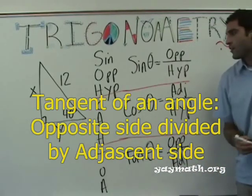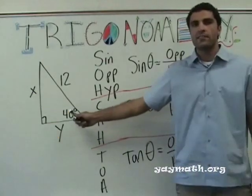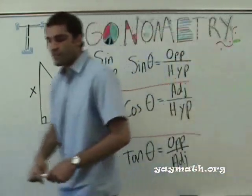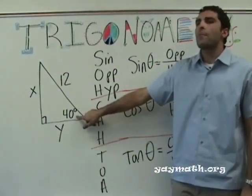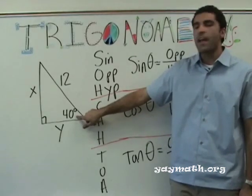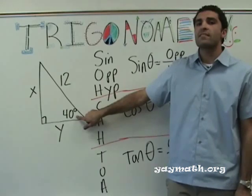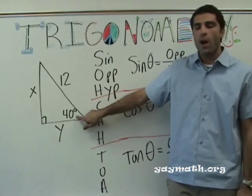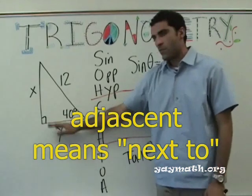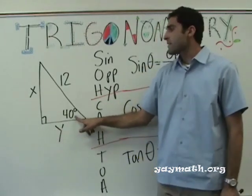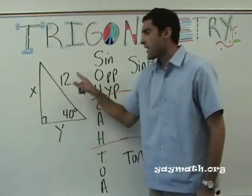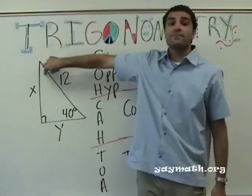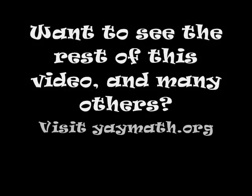So we start at an angle — 40 degrees. What is the opposite side to 40 degrees? X — correct. What is the adjacent side to 40? Y. Adjacent means next to, so Y is the adjacent side. And what is the hypotenuse? 12. The hypotenuse is always opposite the right angle. What's the opposite side?